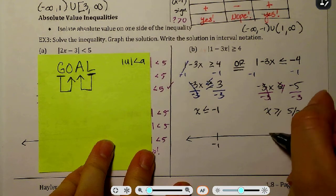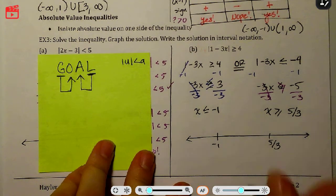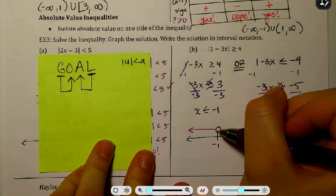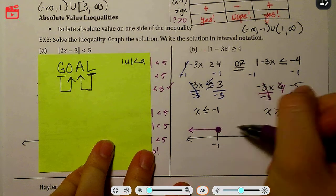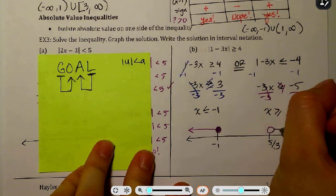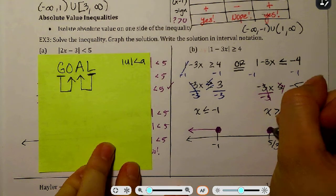Okay. So our points are negative 1 and 5/3. And graphing, this is less than or equal to negative 1. So less than or equal to. And the other one is x is greater than or equal to 5 thirds, or equal to.